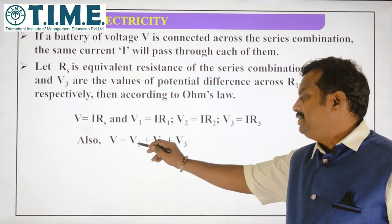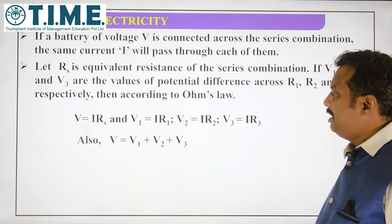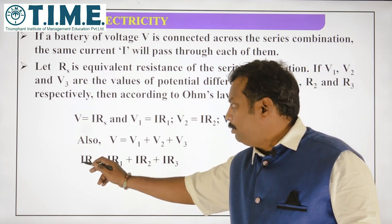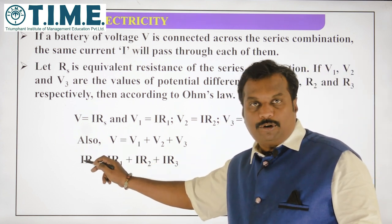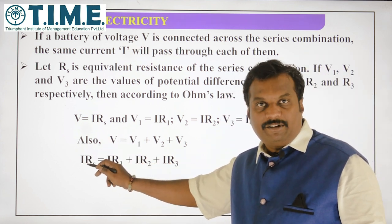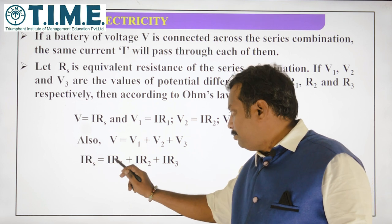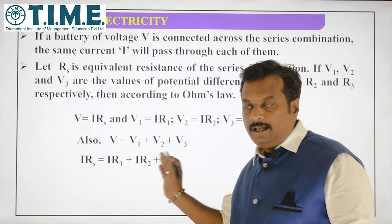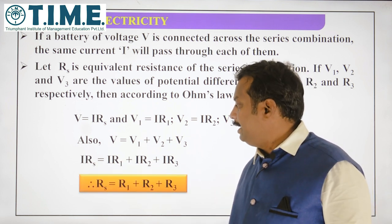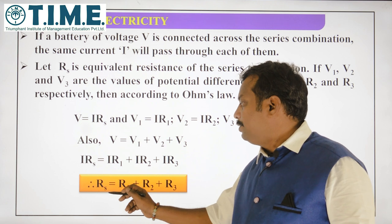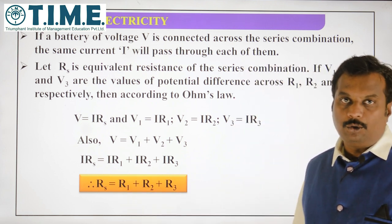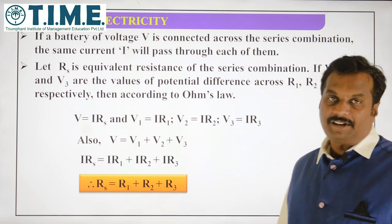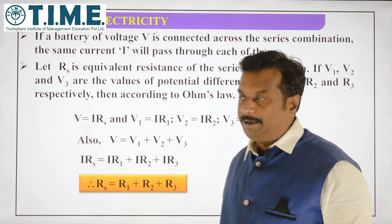The effective voltage V = V1 + V2 + V3. Substituting V = IRS: since the current I is the same throughout, IRS = IR1 + IR2 + IR3. Cancelling I from both sides, the effective resistance RS = R1 + R2 + R3.